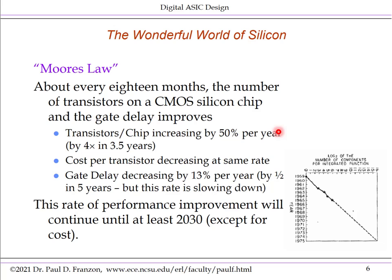The basic observation is the number of transistors per silicon chip improves at an exponential rate, and gate delay and power consumption also improve at a certain rate. Transistors per chip are increasing around 50% per year, tracing back to the 1960s. Traditionally, cost per transistor decreased at the same rate, though that trend has halted. Gate delay decreases by about 13% per year — about 50% every five years — though this is slowing down a bit, but is actually continuing.